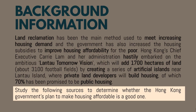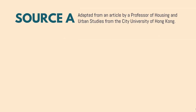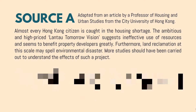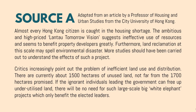Study the following sources to determine whether the Hong Kong government's plan to make housing affordable is a good one. Source A is adapted from an article by a professor of housing and urban studies from City University of Hong Kong — so this is by an academic, someone who has done research on housing in Hong Kong. 'Most average Hong Kong citizens are caught in the housing shortage. The ambitious and high-priced Lantau Tomorrow Vision suggests ineffective use of resources and seems to benefit property developers greatly. However, land reclamation at this scale may spell environmental disaster. More studies should be carried out. Critics increasingly point out the problem of ineffective land use and distribution. There are currently about 1,500 hectares of unused land, not far from the 1,700 hectares promised. If the ignorant individuals leading the government can free up the unutilized land, there will be no need for large-scale, big white elephant projects which only benefit the elected leaders.'